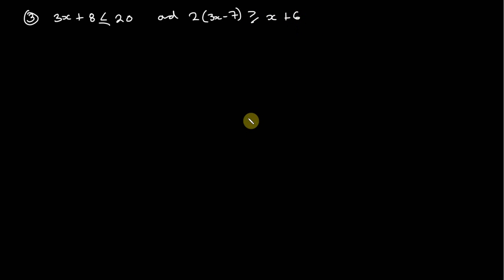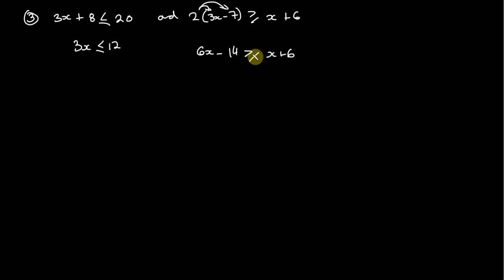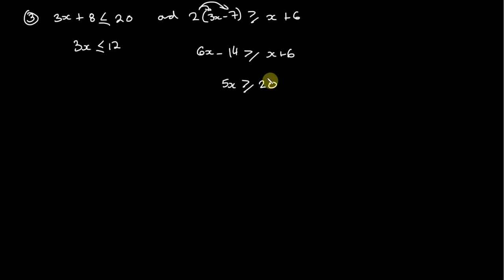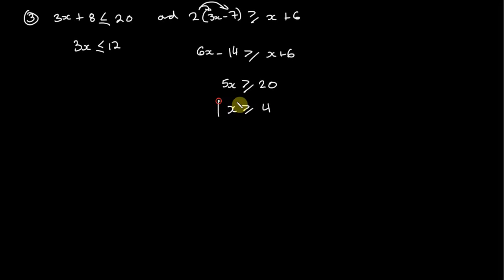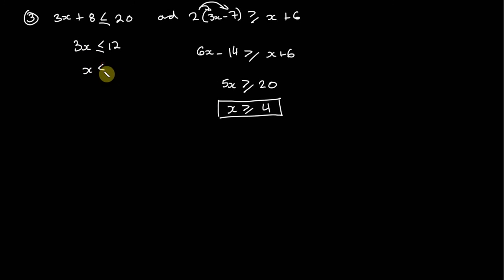On the left-hand side we subtract 8 from both sides, giving 3x is less than or equal to 12. On the right we distribute the 2 to get 6x minus 14 is greater than or equal to x plus 6. Rearranging — subtract x from both sides and add 14 to both sides — gives 5x is greater than or equal to 20, so x is greater than or equal to 4. Dividing the left inequality by 3 gives x is less than or equal to 4.